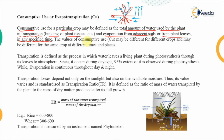The value of consumptive use, which we call evapotranspiration, may be different for different crops depending upon their water requirement. These values may also differ for a single crop depending on the time and place. For example, in summer there are more chances of evaporation compared to winter. So even for a single crop, its water usage may vary depending upon the time and the place.